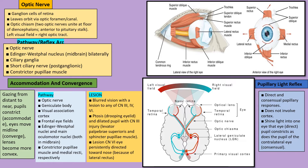The accommodation and convergence response occurs when you shift your gaze from a distant object to something closer — that is called the near response. Three things happen: number one, the pupil constricts; number two, the eyeball moves towards the midline (converges); and number three, the lens becomes more convex. The Edinger-Westphal nucleus is also involved in this pathway.